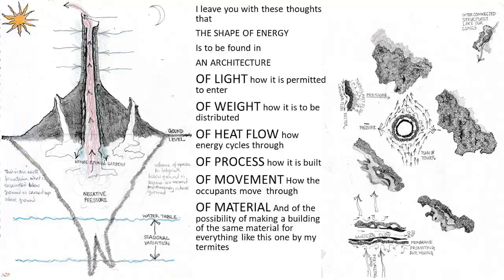When you're designing a building that is sustainable, you must make an architecture of light — how light is permitted to enter the building; of weight — how the weight is distributed; of heat flow — how energy runs through the building; of process — how the building is made; of movement — how people move through it. Imagine a building built by something like termites — called AI, artificial intelligence — and they all make it out of one material only.